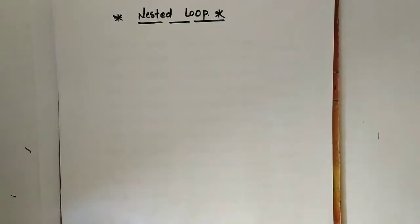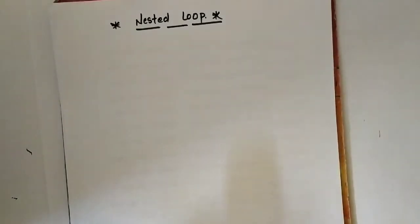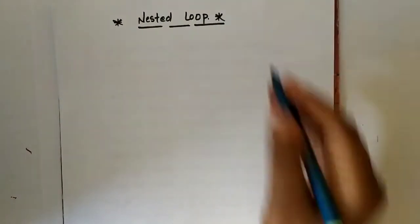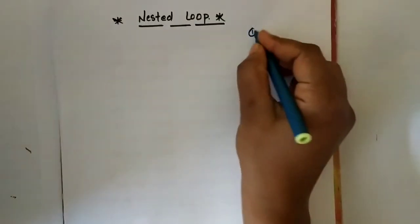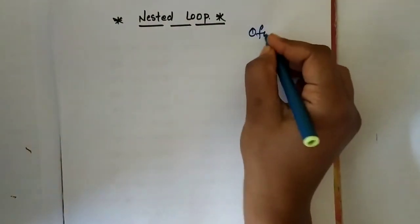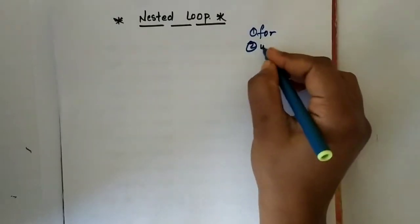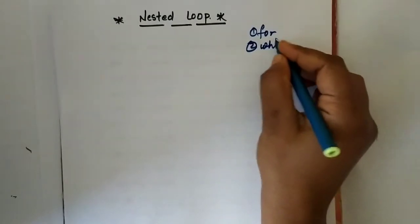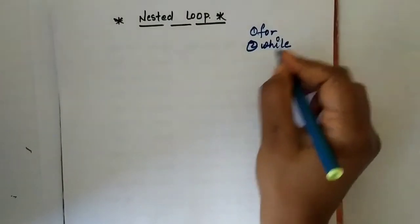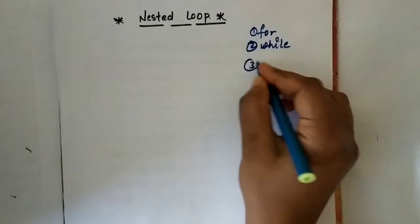In the previous video we already discussed about the types of loop. There are three types of loop: the first one is for loop, the second one is while loop, and the third one is do-while loop.